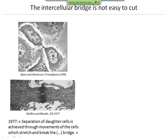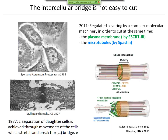The existence of this tiny bridge connecting the two daughter cells has been described a very long time ago — images from 1968 and 1977 show the two daughter cells connected by this tiny bridge in phase-contrast imaging. Old results suggested that separation of daughter cells is achieved through movement that can break the bridge, but very recently a new model based on molecular analysis has been proposed involving severing of the plasma membrane by the ESCRT machinery and severing of microtubules inside the bridge by spastin. So it's a complex molecular mechanism that actively severs the bridge.